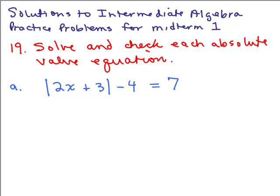We're on to number 19 of the solutions to the intermediate algebra practice problems for midterm 1. Solve and check the absolute value equation. We have the absolute value of 2x plus 3, minus 4, equals 7.